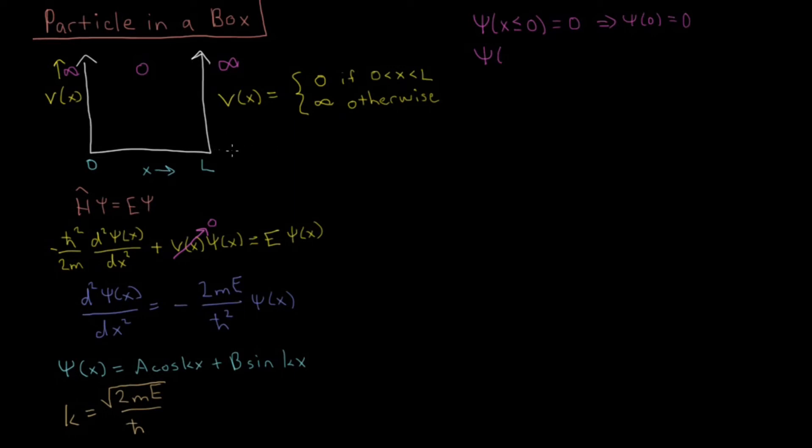And similarly, since the particle can't be outside the box over here, it's infinite potential energy over there, where we have x, which is greater than or equal to L, equals 0. So as well, we end up with the boundary condition psi of L equals 0.